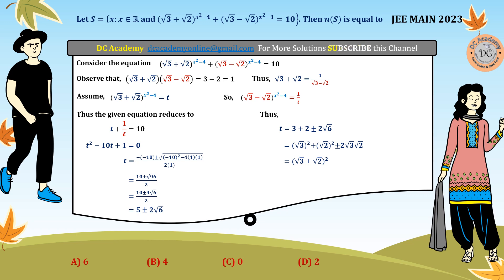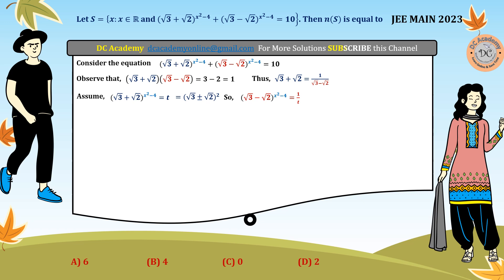Now let's find the value of x. Since t = (√3 + √2)^(x² − 4) has two values with the ± sign, we consider two cases. In Case 1 (plus sign), since the bases are the same, we equate the exponents: x² − 4 = 2, which gives x² = 6, so x = ±√6. These are members of the set S.